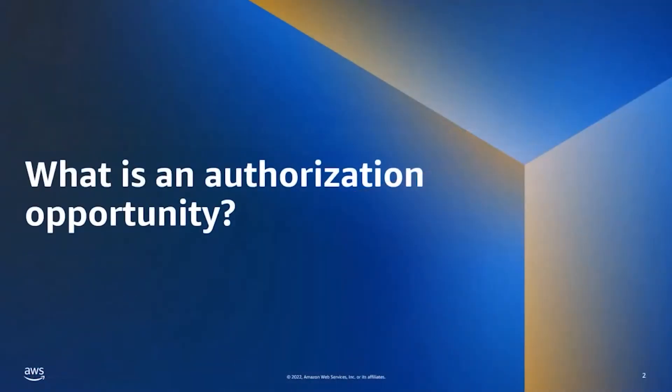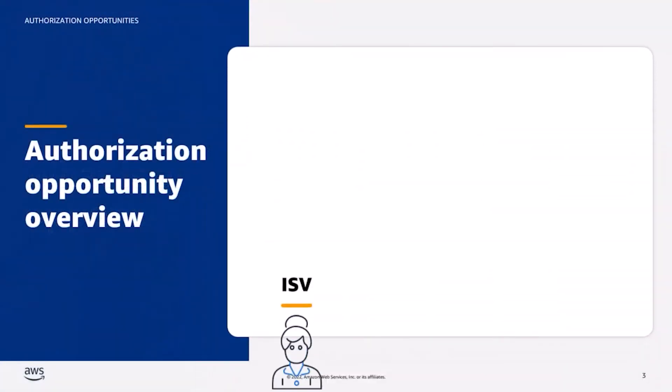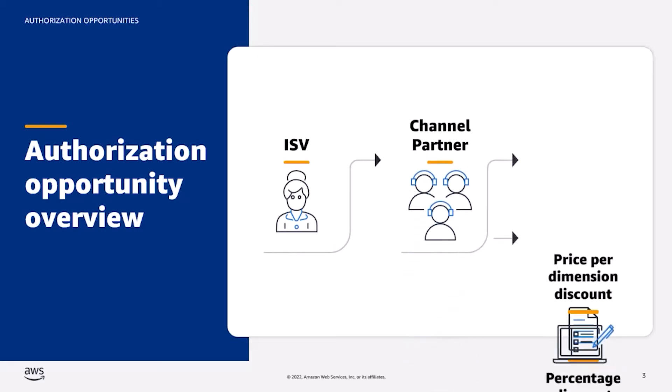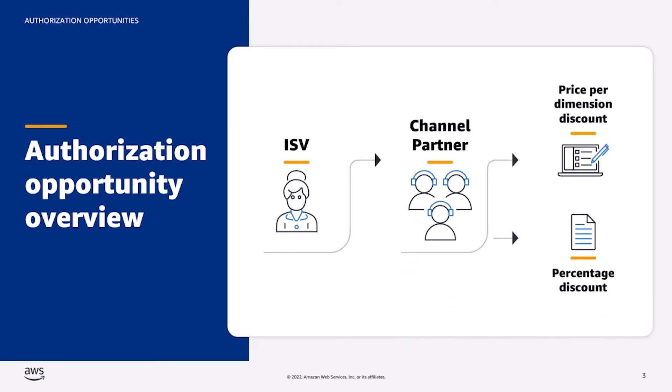Let's start with an overview of what authorization opportunities are. An authorization opportunity is when an independent software vendor, or ISV, authorizes a channel partner, or CP, to resell their solution using either a custom price per dimension or a percentage discount. When an ISV authorizes a CP to resell their software, they have the option to create different types of authorization opportunities. The ISV determines whether the authorization opportunity is recurring or available for one-time use.